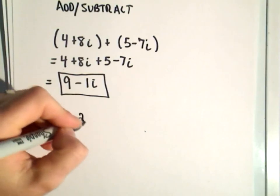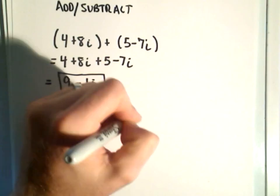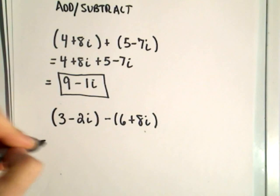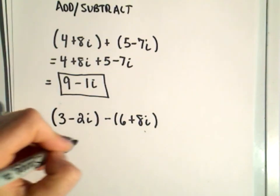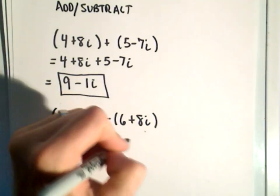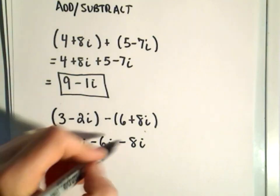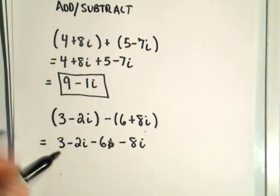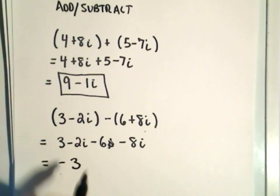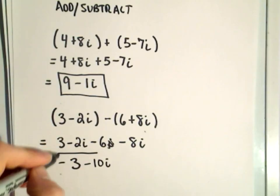Suppose it was (3 minus 2i) minus (6 plus 8i). Do the same thing — get rid of the parentheses on the first part, but distribute the negative on the second part. So we get minus 6 minus 8i. That gives us 3 minus 6, which is negative 3, and then negative 2i minus 8i would be negative 10i.